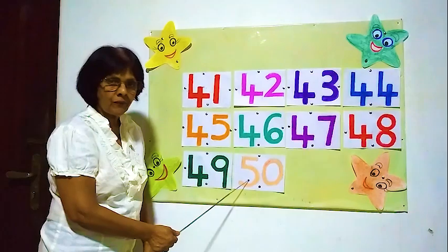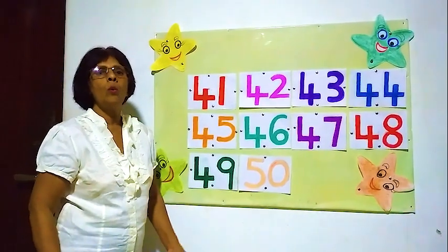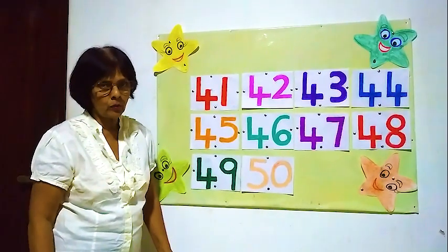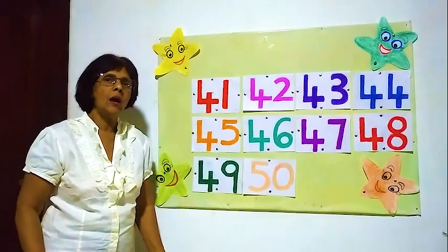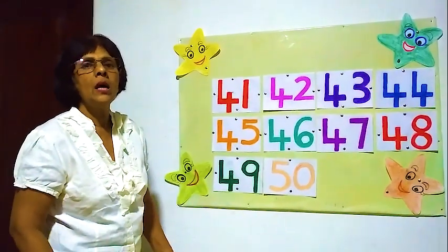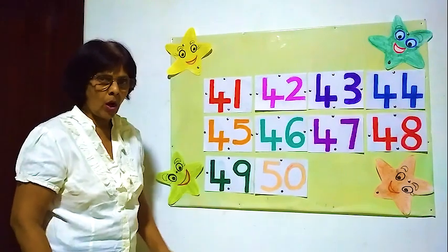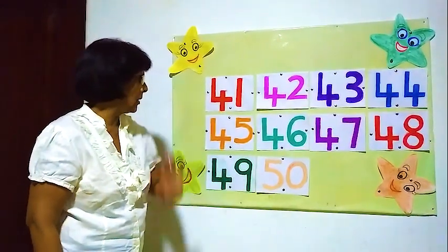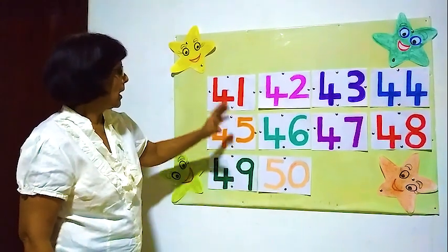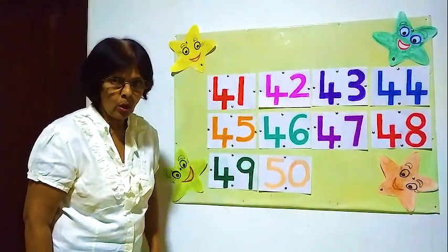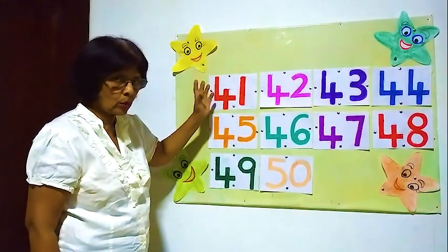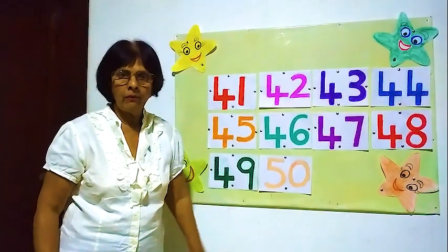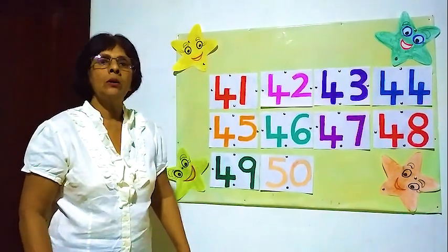Now we know 1 to 50 numbers. After 50, we can do the other numbers. Now we have finished up to 50, right? I introduced you the 0, and from 0 to 50 we have finished.